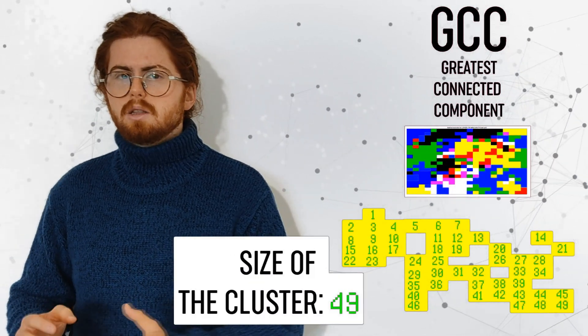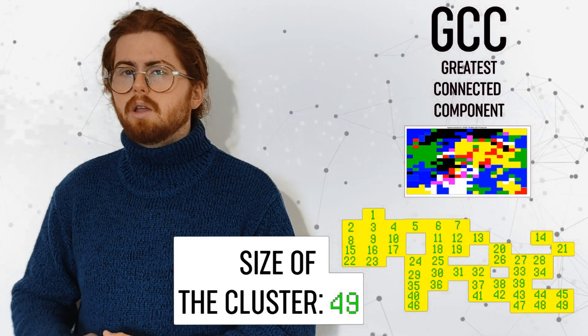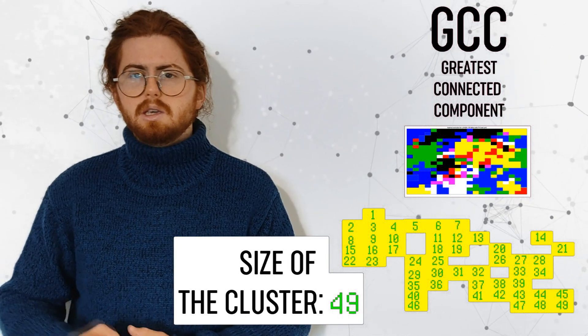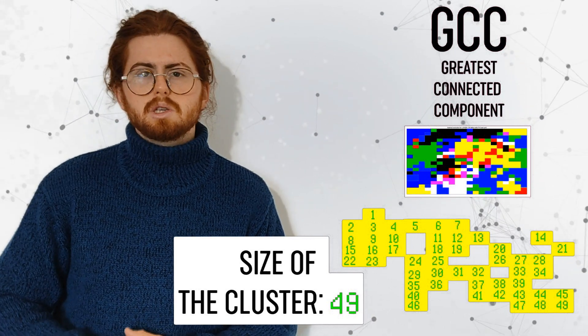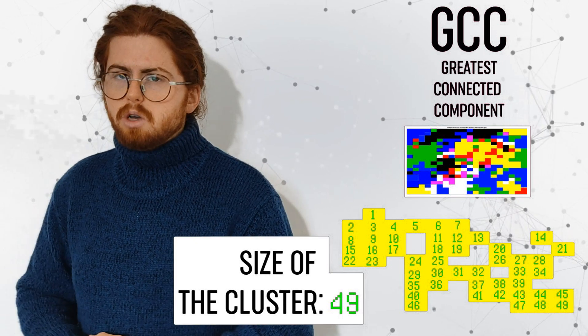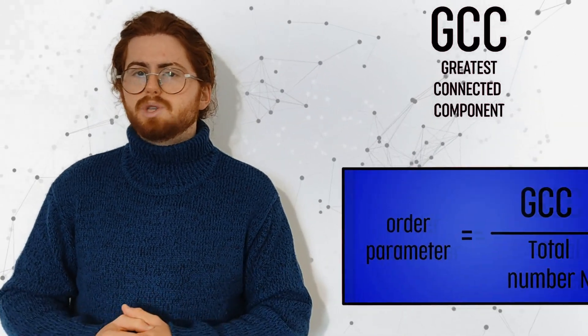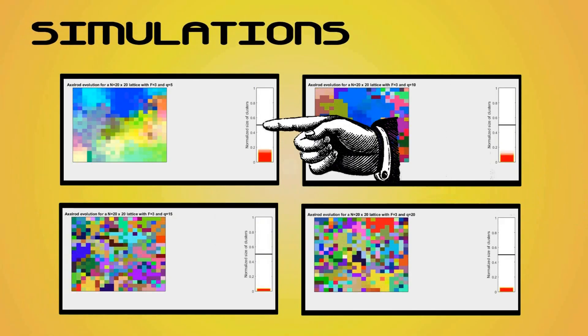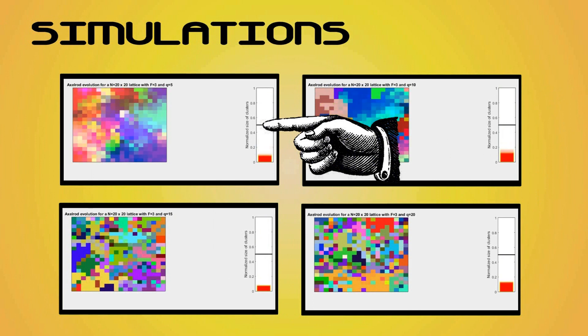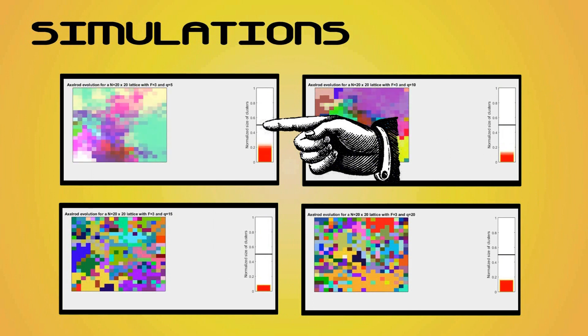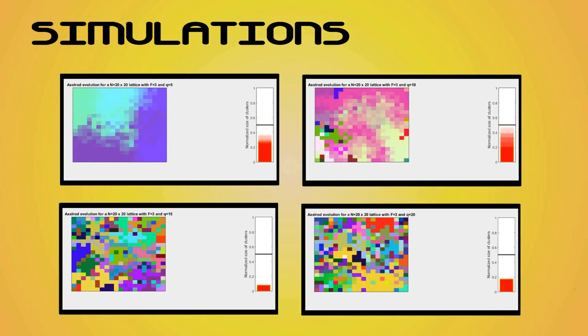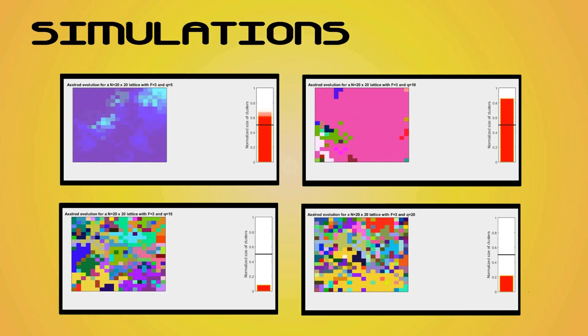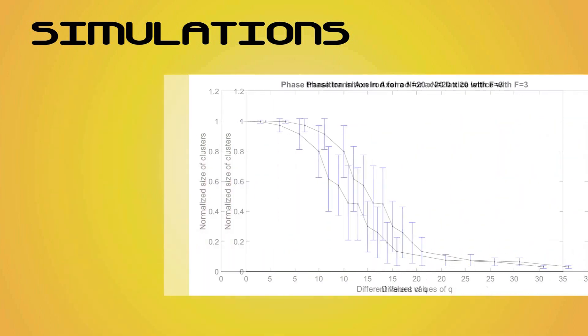In statistical physics, a parameter that is used to characterize a phase transition is usually called an order parameter. In this case, the order parameter is the GCC, in the same way as in the Ising model the order parameter was the total magnetization. Well, I am actually going to use the size of the bigger cluster divided by the total number of the society, which is 400 in this case, as an order parameter that is now ranging from 0 to 1. Now, we are going to see some simulations for different values of Q, but with this bar right here indicating the value of the order parameter, the normalized size of the biggest cluster. Observe that this value seems to decay abruptly with Q when Q is greater than 10. This is precisely the phase transition we were talking about before. This phase transition can be visualized by representing the curve of the cluster size as a function of Q.